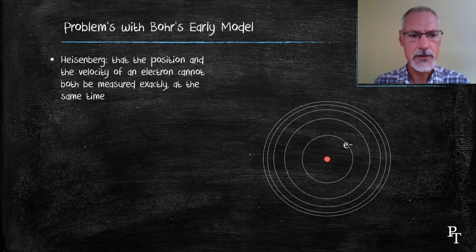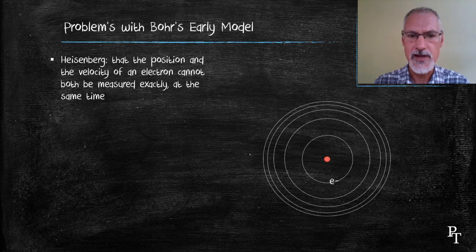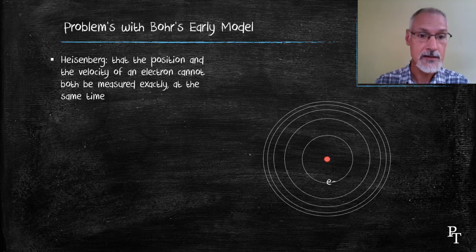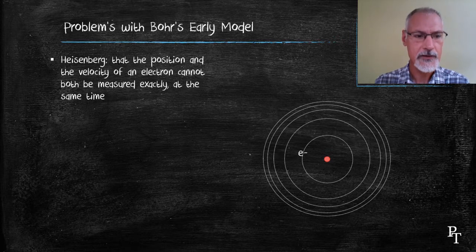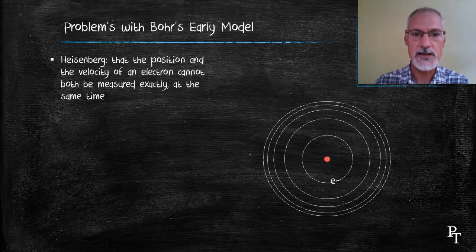First of all, Werner Heisenberg came up with what's called the uncertainty principle — the idea that the position and velocity of an electron cannot both be measured simultaneously. One either knows all about one and none of the other, or all of the other and none about the one. Either you knew everything about its velocity, in which case you didn't know where it was, or you knew exactly where it was, but you had no idea of its velocity and hence its energy.